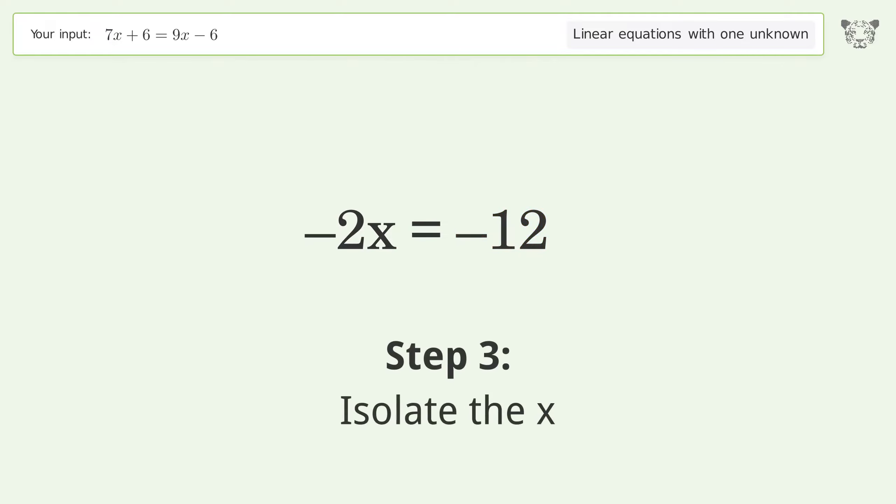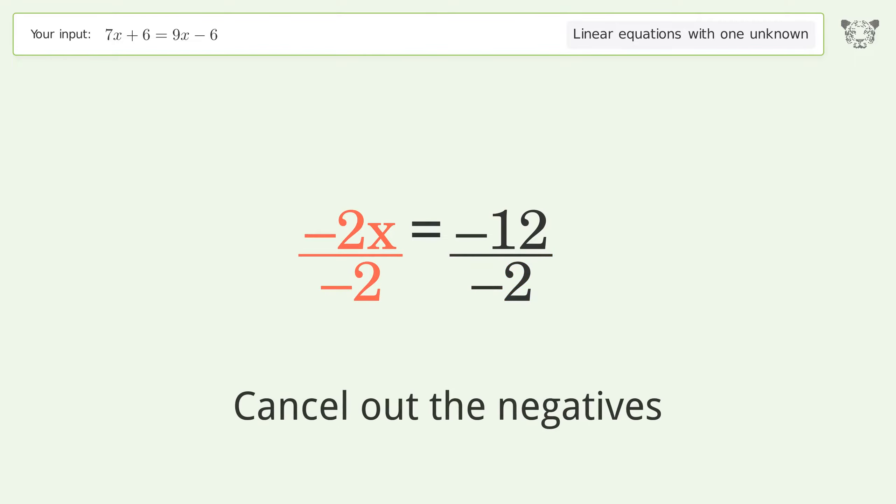Isolate the x. Divide both sides by negative 2. Cancel out the negatives. Simplify the fraction. Cancel out the negatives.